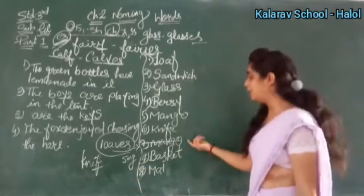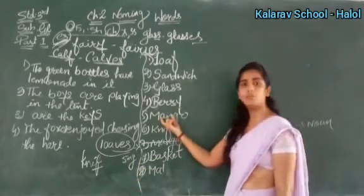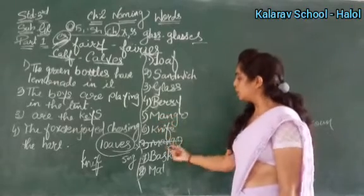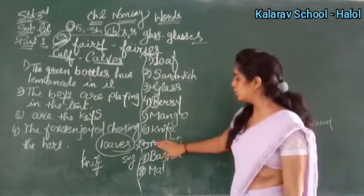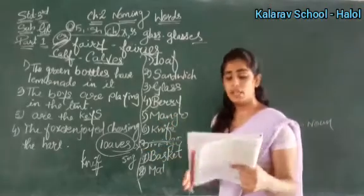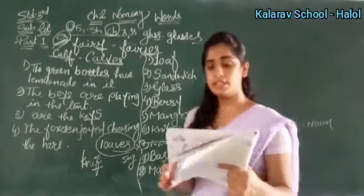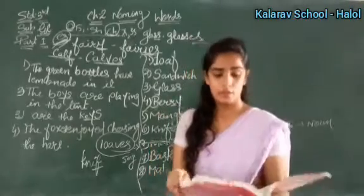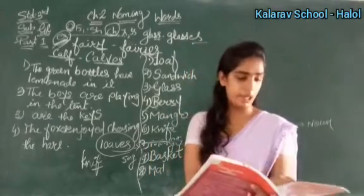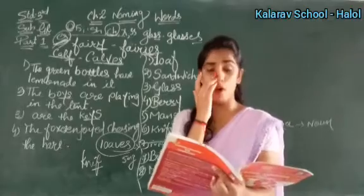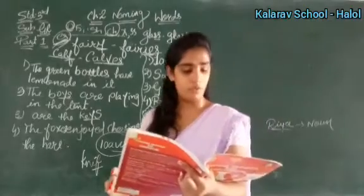Mangoes ka toh only singular is mango — so there is no need to write two times. Clear up till this. Now see the next page — it is again the form of irregular plurals.